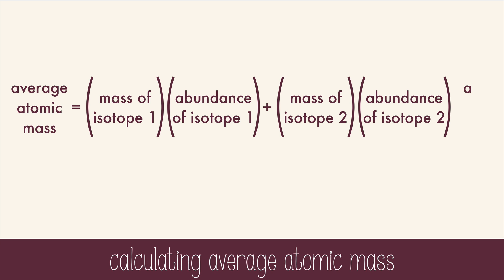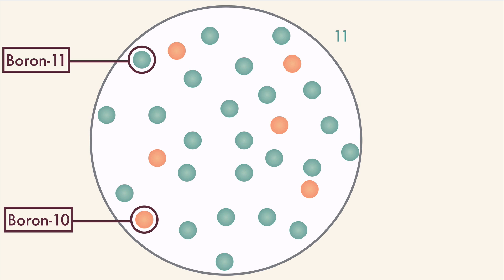And this goes on until all the isotopes are represented. So, let's find the atomic mass for boron. The mass of boron 11 times 0.8, which is 80% in decimal form, plus the mass of boron 10 times 0.2 gives us 10.8 atomic mass units.